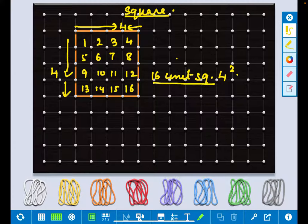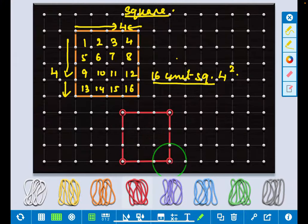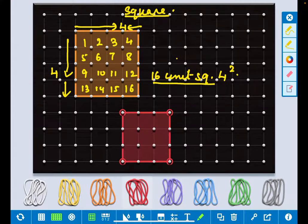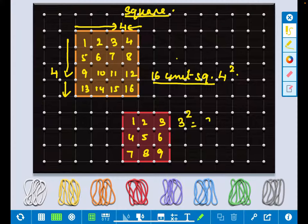Same way, if I take here 3 square, how many unit squares will be there? If you count, it will be 1, 2, 3, 4, 5, 6, 7, 8, 9. 3 square is 9 unit squares to fill up that. Number of rows is 3, number of columns is 3, so it will be 9 unit squares.